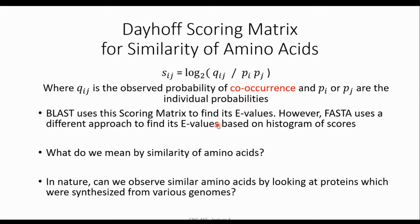BLAST uses these scoring metrics to find its E-values. As mentioned, inside databases they already have information about different sequences, so based on relative frequency they can come up with probabilities like Qij and Pj. FASTA uses a different approach to find its E-values based on histograms of scores. So different databases don't use the same formula for their E-values, and as we mentioned, E-values could be different from one database to another.